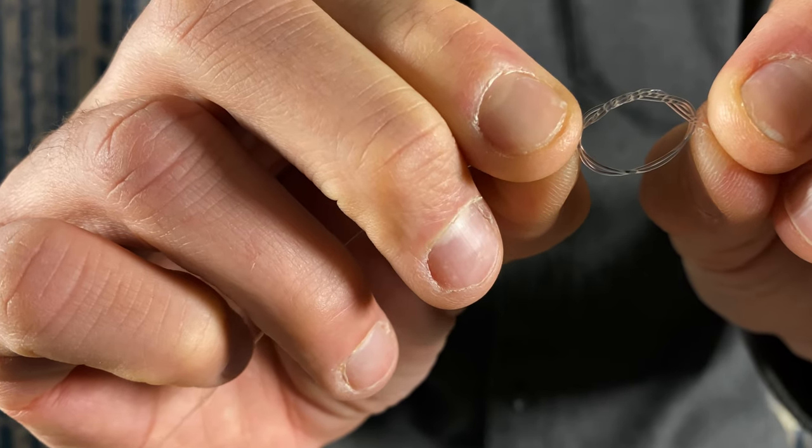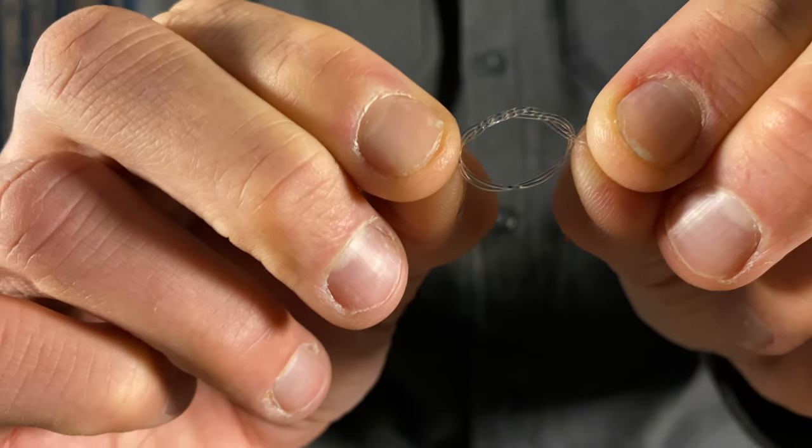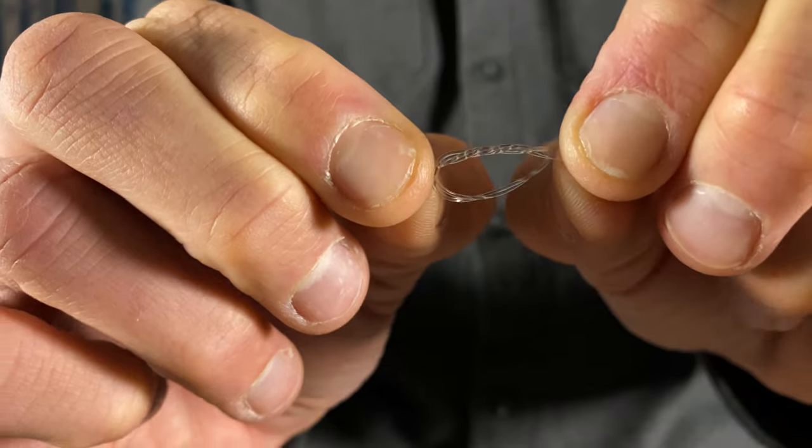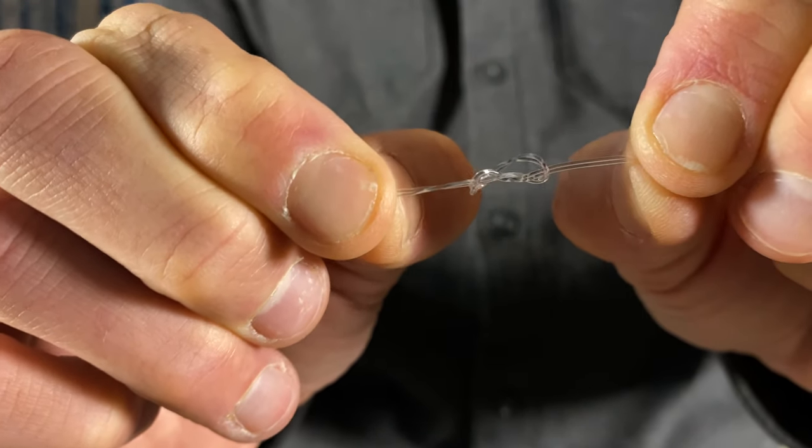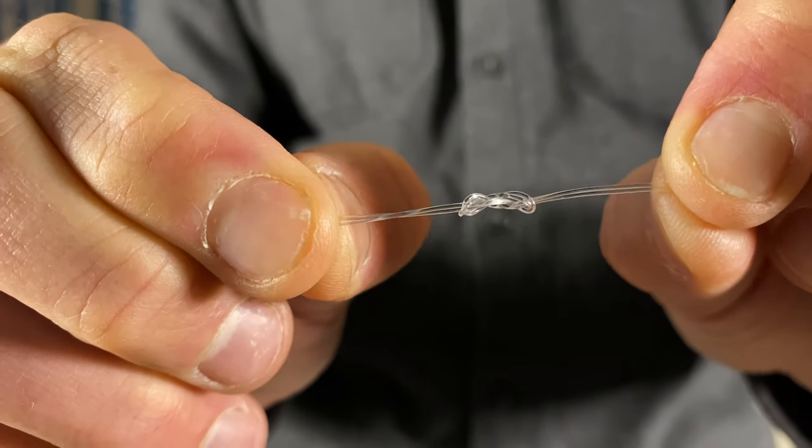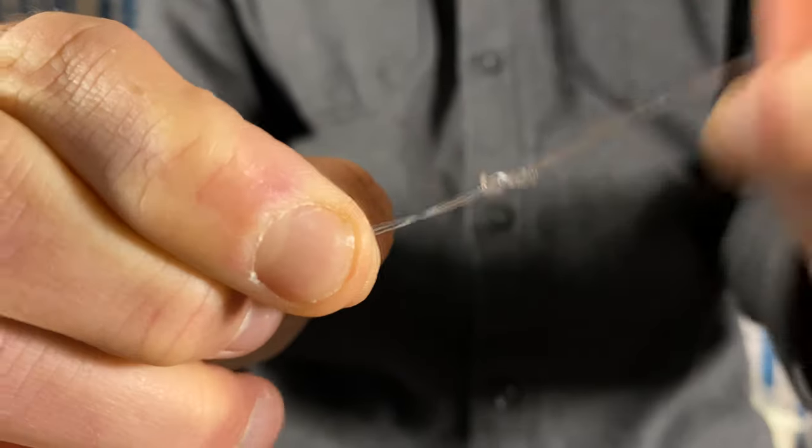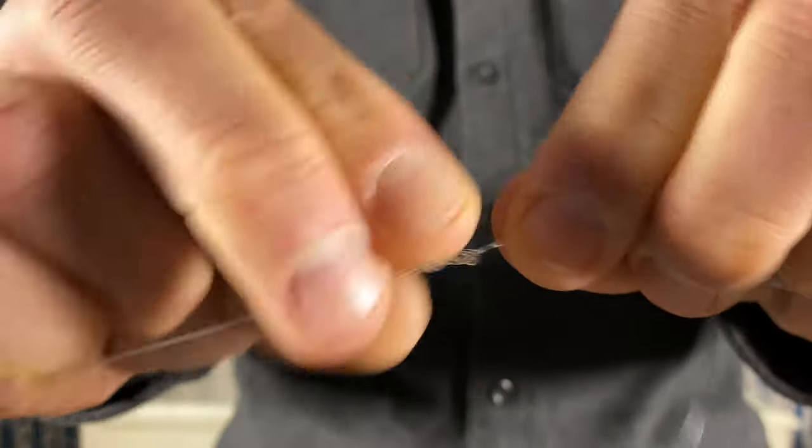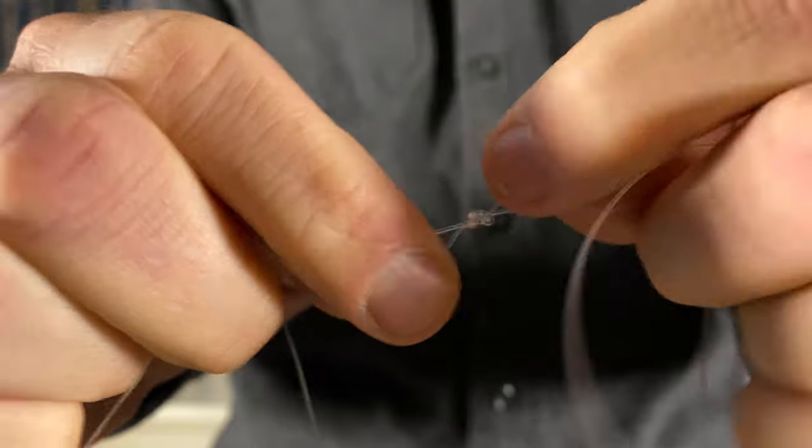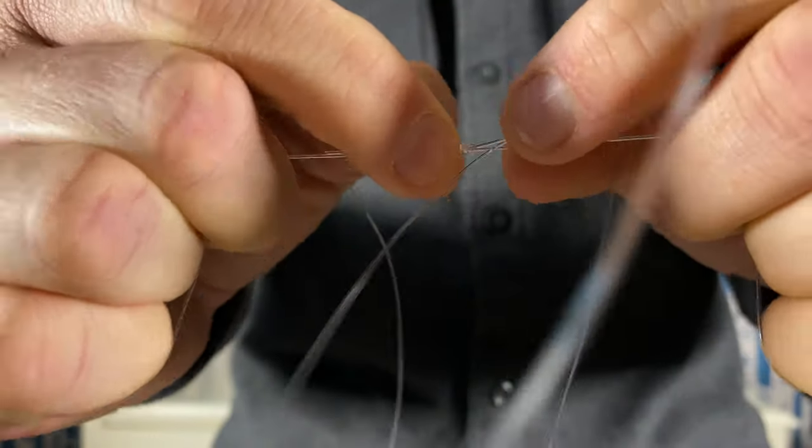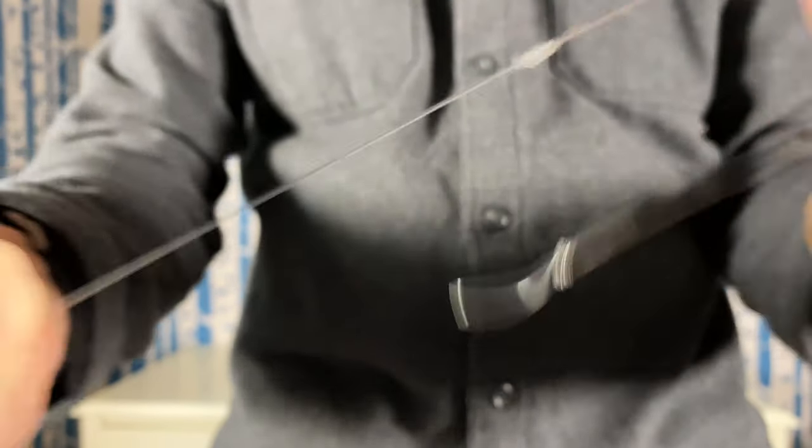So when you pull it down it's going to make this figure eight and that's one of the ways that you know that the knot is being tied correctly. I always lick my knots to lubricate them so they slide into place a little bit better, but for this purpose I'm just going to cinch it down.